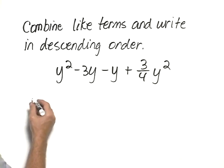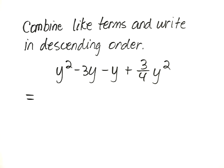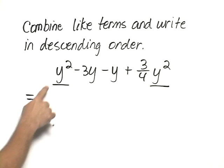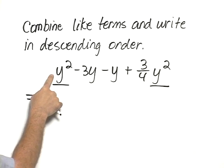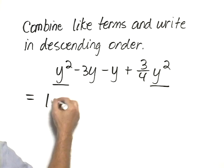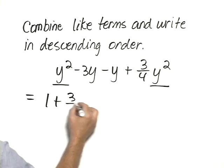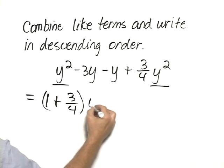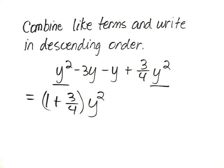At the same time that I combine, I'll also write them in descending order, so we'll start with the y squared. Remember, the coefficient of this y squared is 1, so I have a 1 plus 3 fourths, and that's in front of the y squared.